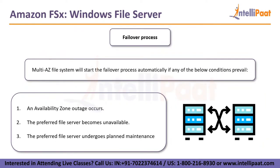There's also a failover process for Windows File Servers. A multi-availability zone file system is available. When selected, it starts the failover process automatically under certain conditions: if an availability zone outage occurs, it automatically creates a file system in another availability zone. If the preferred file server becomes unavailable, it fails over to a secondary server. And if the preferred file server undergoes planned maintenance, the secondary server is used, then failover returns to the primary once it's back.